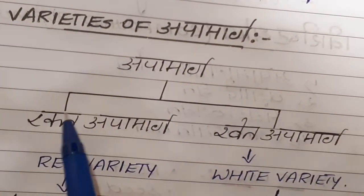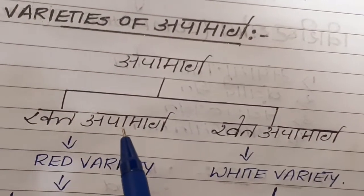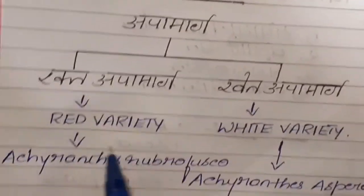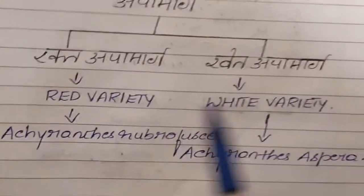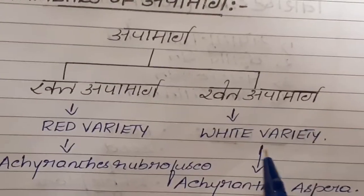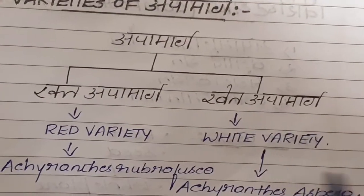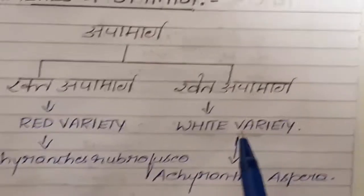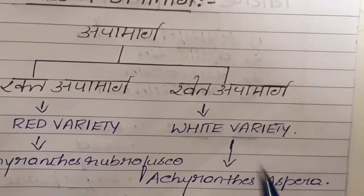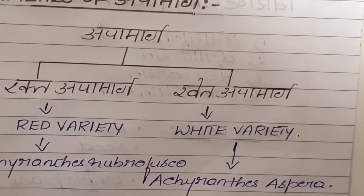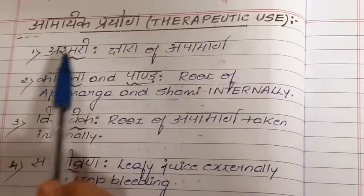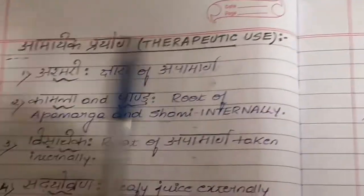Bahya rogas include: Jvara (fever), Daurbalya (weakness), Kushtha (skin disorders), Karna roga (diseases of the ear), and Visha (poison). Coming to the varieties of Apamarga — there are two varieties: Rakta Apamarga and Shweta Apamarga. Rakta Apamarga is the red variety (Achyranthes rubrofusca) and Shweta Apamarga is the white variety (Achyranthes aspera).